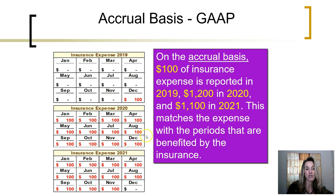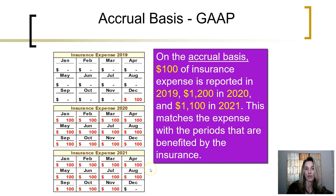This method is matching the insurance expense incurred in each of these years with the revenues that that insurance expense helped earn. Thus, we have a better measure of profits by recording the insurance expense during the periods it is incurred.